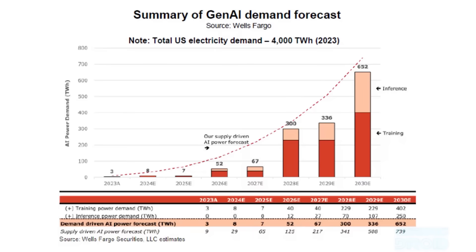AI is also expected to dramatically increase its energy usage in the near future. In 2023 in the US, AI consumed around 8 TWh. This is expected to grow to 52 TWh by 2026 — a 550% increase — and by 2030 it is expected to reach 652 TWh, a 1,150% increase on 2024 levels.